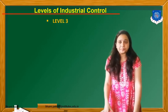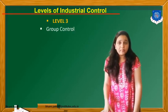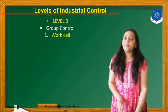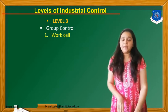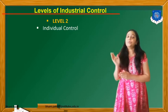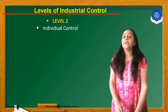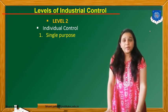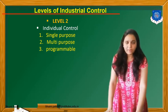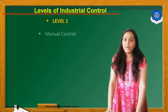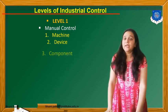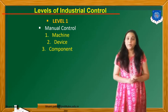Level number 3 is known as Group Control, which is sub-divided into work cells. Level number 2 is known as Individual Control, and it has three sub-partitions: single-purpose, multi-purpose, and programmable. The last level, level number 1, is Manual Control, which contains the Machine, Devices, and different types of Components.